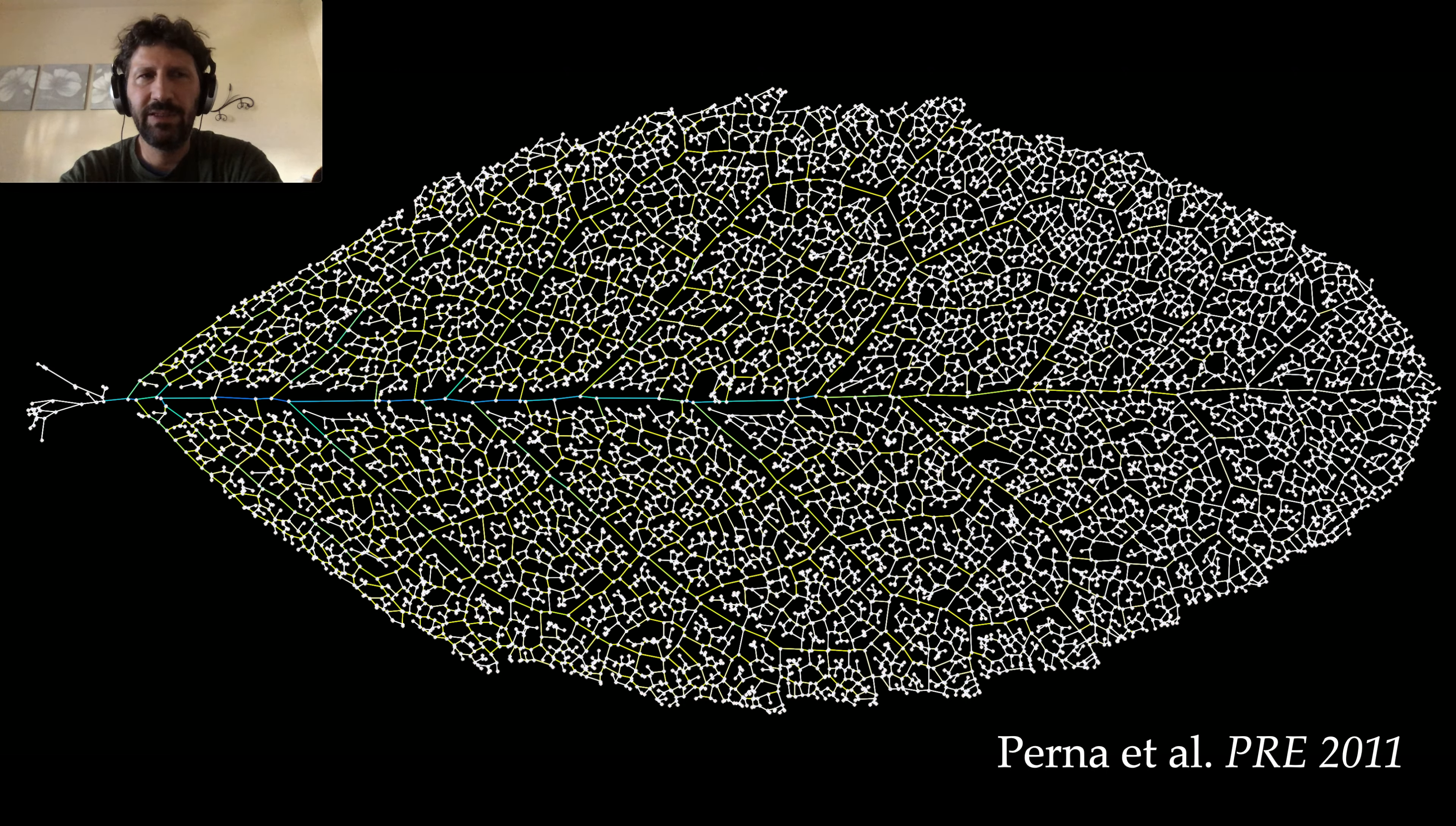In many biological systems, we also observe similar pattern formation phenomena. Here is the example of leaf veins that, in terms of mechanism, can be explained as the result of similar mechanisms as the cracks I showed in the previous slide.